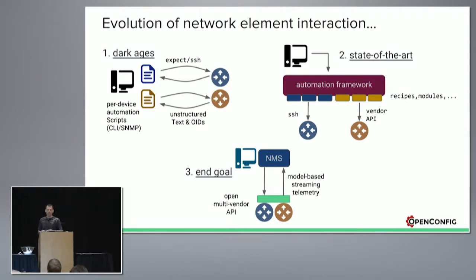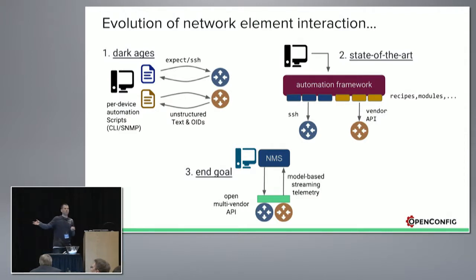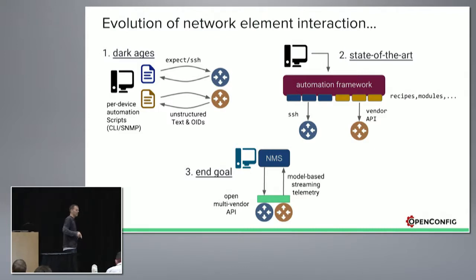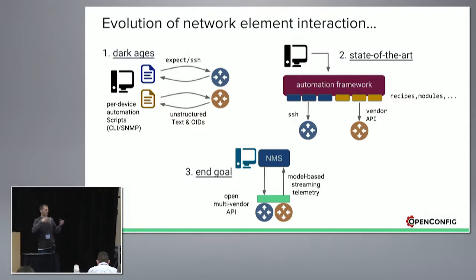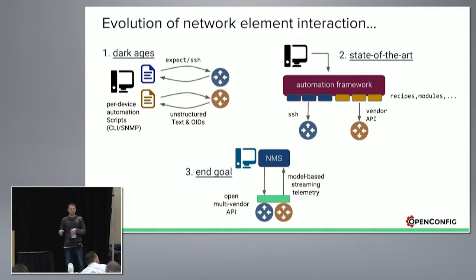Then we have the current way of doing it, the state of the art: APIs. Everything's API-driven. The problem we see with APIs is that once everybody gets a REST API - XML, JSON blobs - that's great, but three to five years from now we're essentially faced with the same problem: one vendor's implementation is going to look different than another vendor's. So we've just swapped out one CLI problem for another.